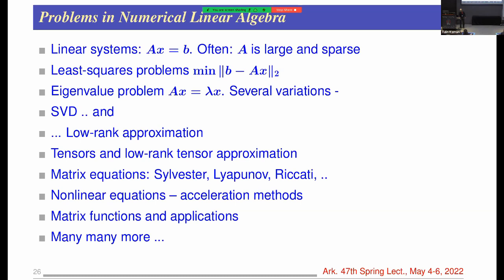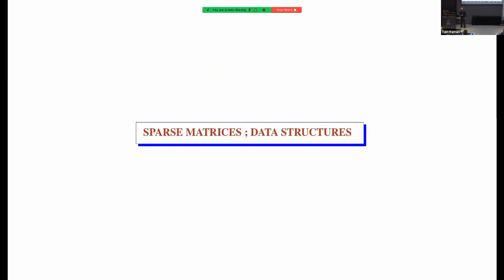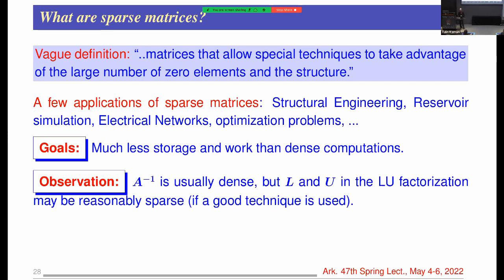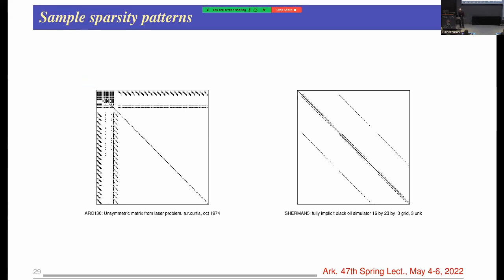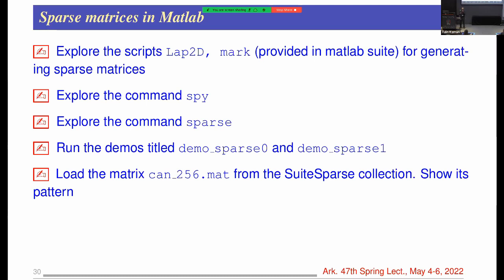Now let's talk about real things — sparse matrices. There's not a really formal definition; it's essentially something that allows you to take advantage of the large number of zeros, with the goal of using much less storage than dense computations. One thing often not observed: the inverse of a sparse matrix is dense, but when you do LU factorization, the L and U factors tend to be relatively sparse.